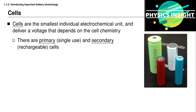Some cells are designed to be used only one time and then recycled. Others are designed to be rechargeable. The single-use cells are referred to as primary cells, and rechargeable cells are referred to as secondary cells.